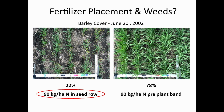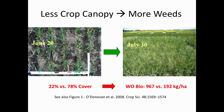Here's fertilizer placement. This is a little aggressive—90 kg of N in the seed—but you can see in barley that even at 30 kg in dry years, you can reduce the stand. You get 22% green canopy with seed-placed nitrogen, versus 78% green where you've placed nitrogen in the sideband—a much more competitive stand. When we measured wild oat biomass in that crop, we had five times as much wild oat biomass where we'd placed too much nitrogen with the seed. That's another practice we need to avoid for weed management.